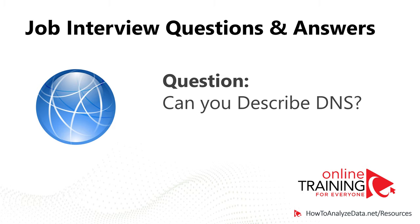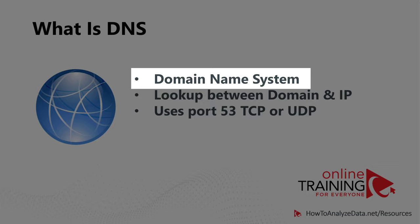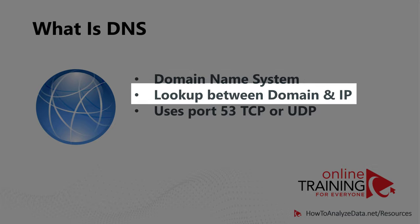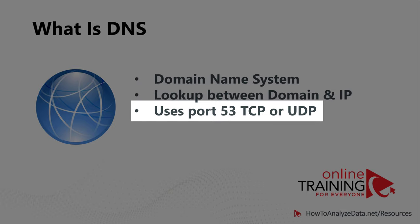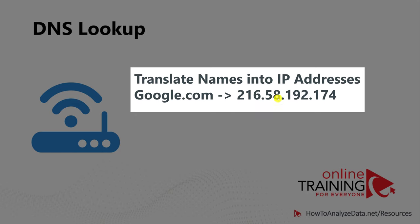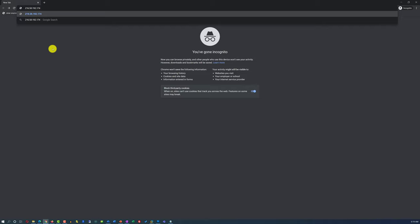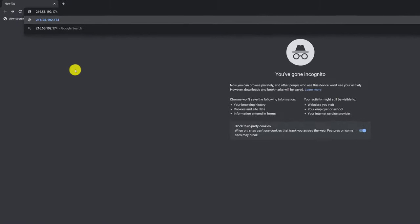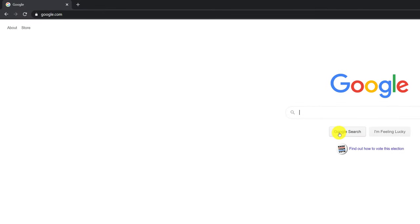A lot of times during the interview process you might be asked to describe DNS. DNS stands for domain name system. This is the system to lookup between domain names and IP addresses, which uses port 53 for TCP protocol and is also available on UDP. If you type google.com in your internet browser, the computer doesn't know what google.com is, and it asks a DNS server to do the lookup. DNS makes it possible for us to type google.com and instead get connected to IP address 216.58.192.174. You can make a cool experiment and type this IP address right in your browser, and when you hit enter, you will get right into google.com.